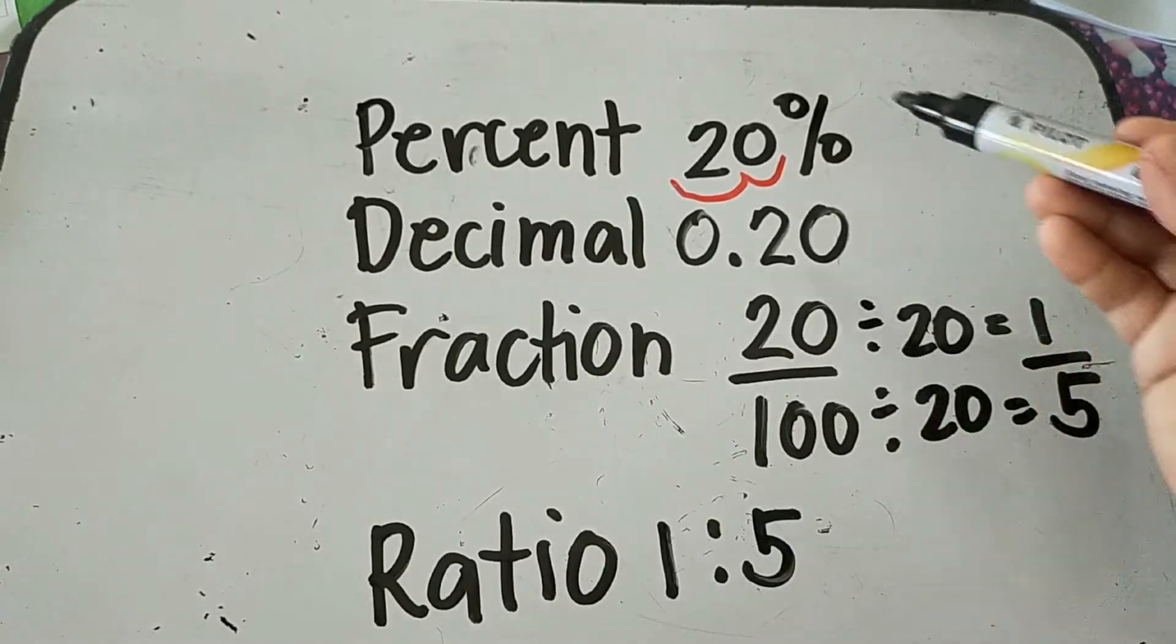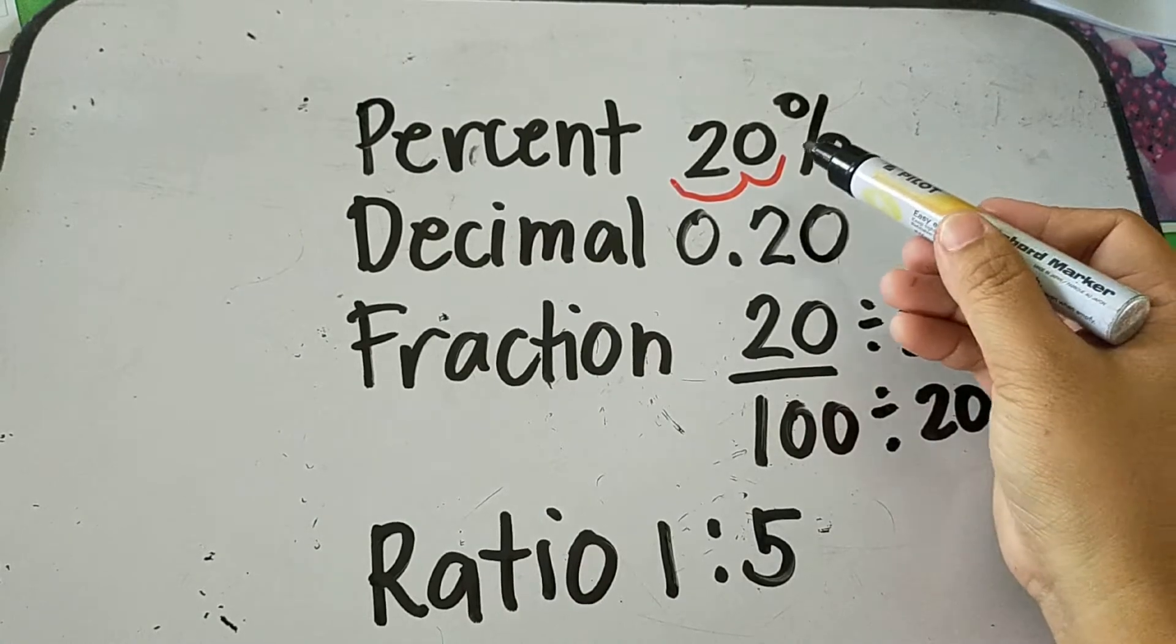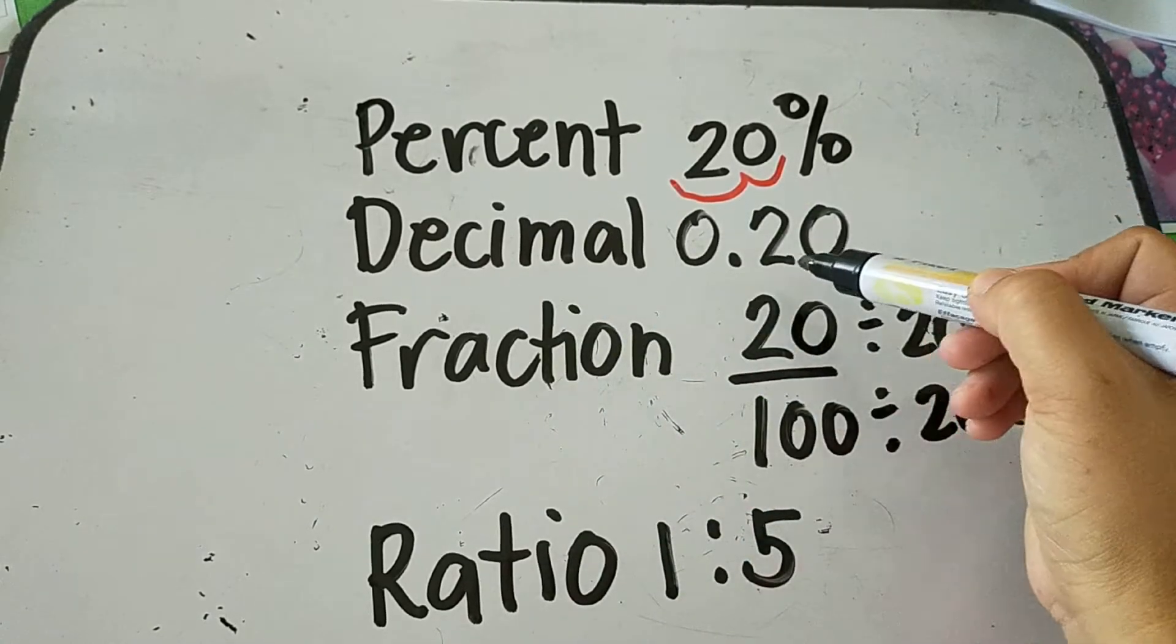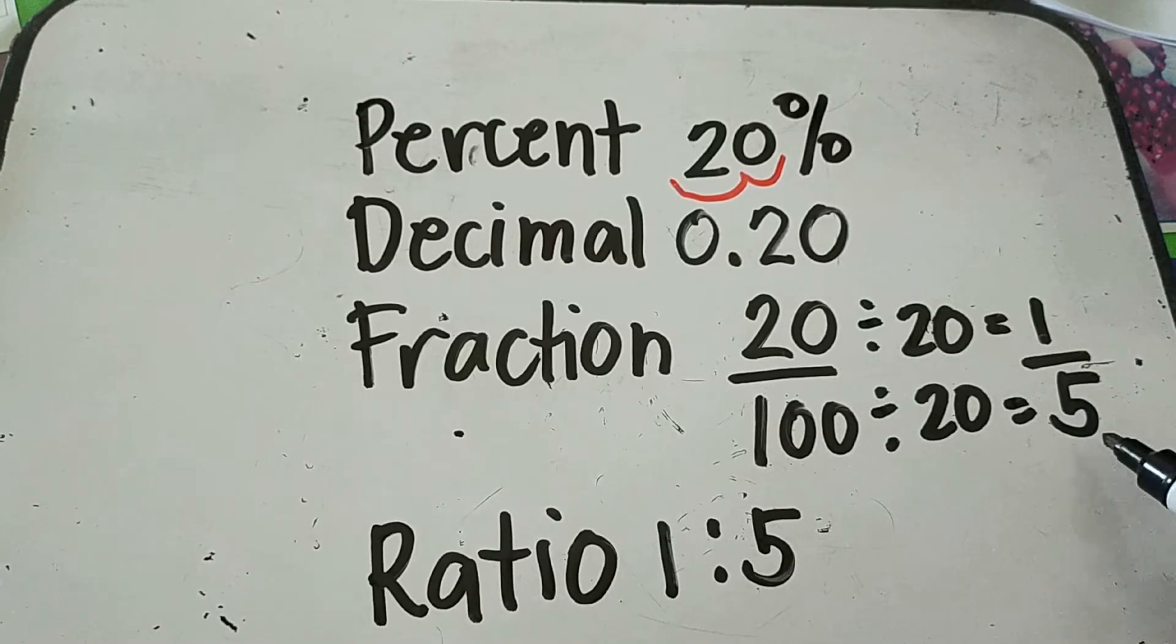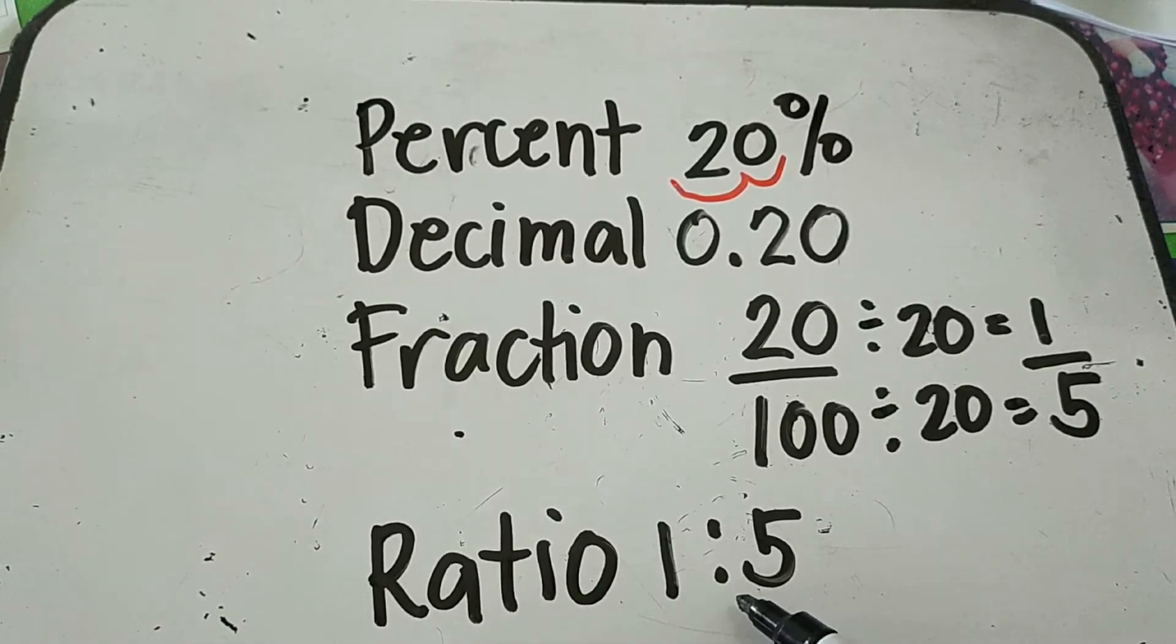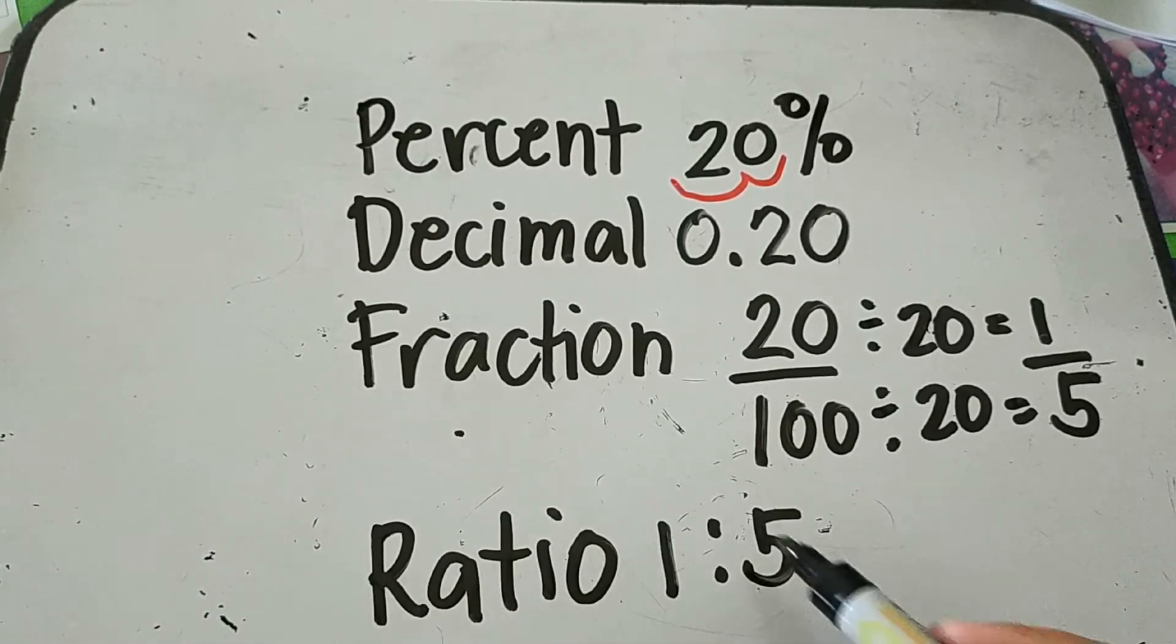So that means in percent form, 20 percent. In decimal form, 0.20. In fraction form, it should be 1/5. And then in ratio form, it should be 1 is to 5.